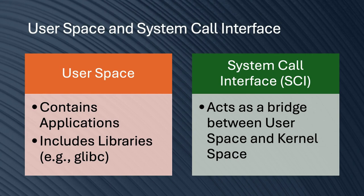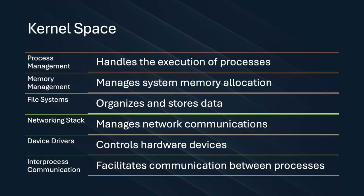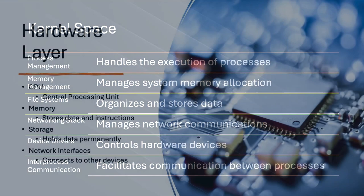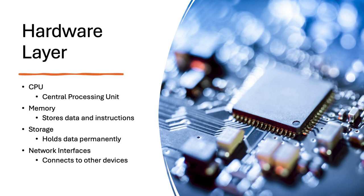The Linux kernel architecture consists of the user space, which includes applications and libraries like glibc, and the system call interface (SCI) that connects user space with the kernel space. The kernel space includes process management, memory management, file systems, networking stack, device drivers, and inter-process communication. The hardware layer consists of CPU, memory, storage, and network interfaces.